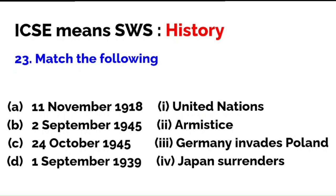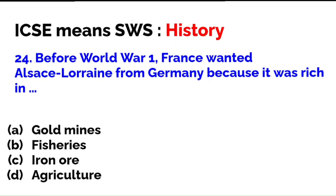Match the following: 11th November 1918 was the Armistice — when Germany agreed to stop fighting in the First World War. 2nd September 1945 was when Japan surrendered in the Second World War. The announcement of surrender was made on 15th August, but the official surrender took place on 2nd September. Incidentally, Lord Mountbatten was present during WWII, and when he became the last Governor General of India, 15th August was chosen — the day Japan announced its decision to surrender — for India's independence, for his own reasons. 24th October 1945 is United Nations Day. 1st September 1939 was when Germany invaded Poland.